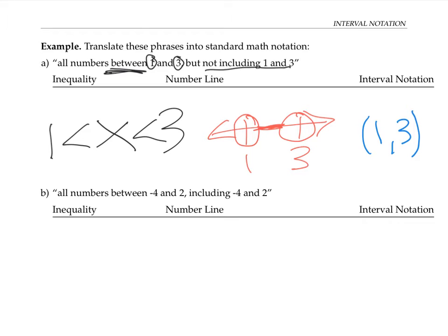However, if it were including 1 and 3, we would use hard brackets. It is important to note for interval notation that the smallest value always goes on the left, and the biggest value always goes on the right. You also include a comma between your two key values.